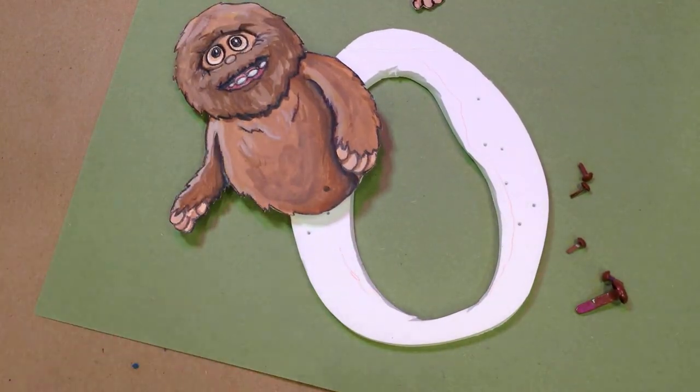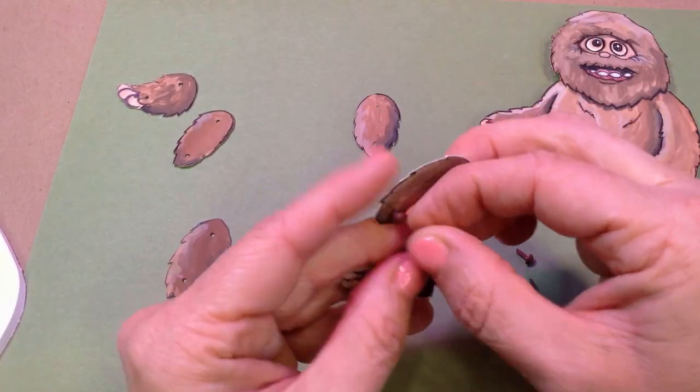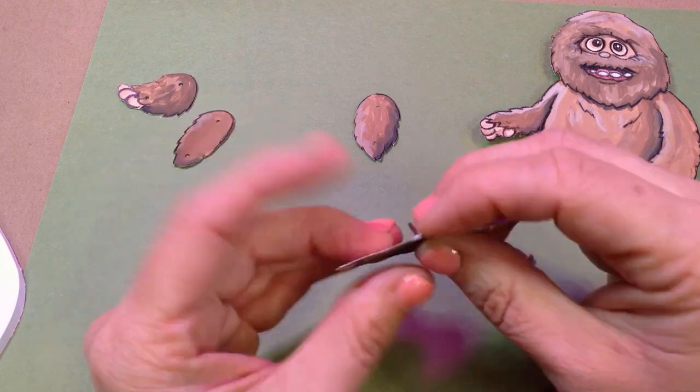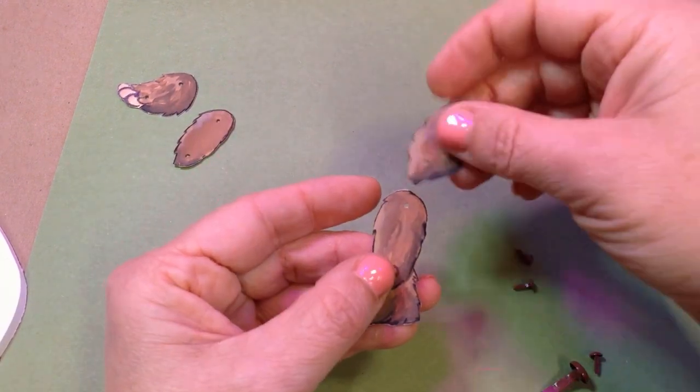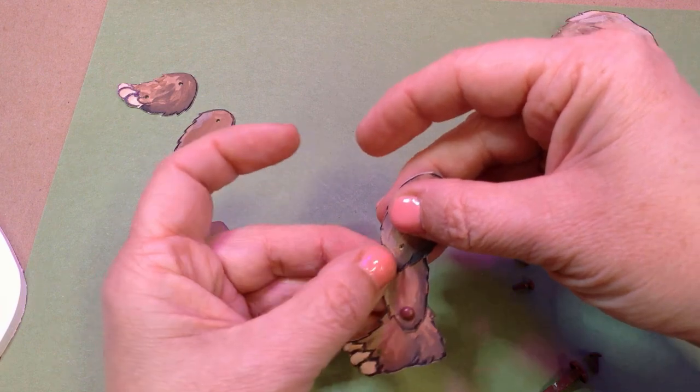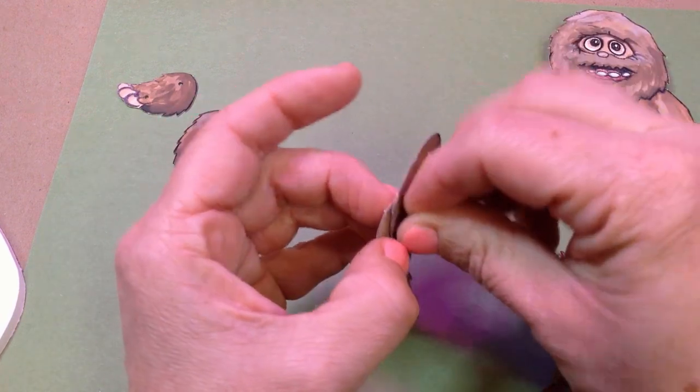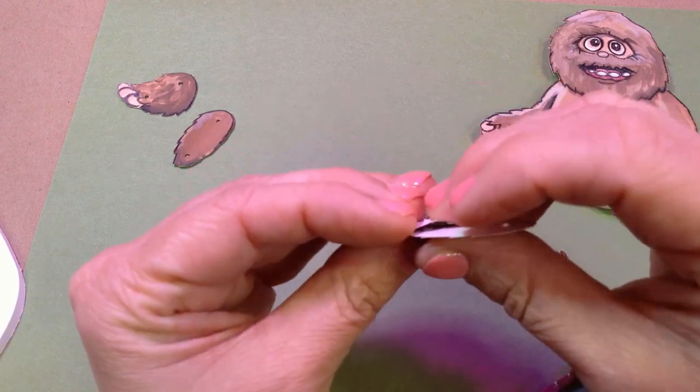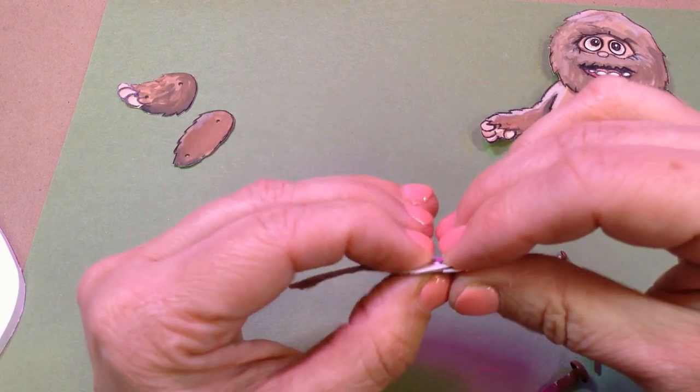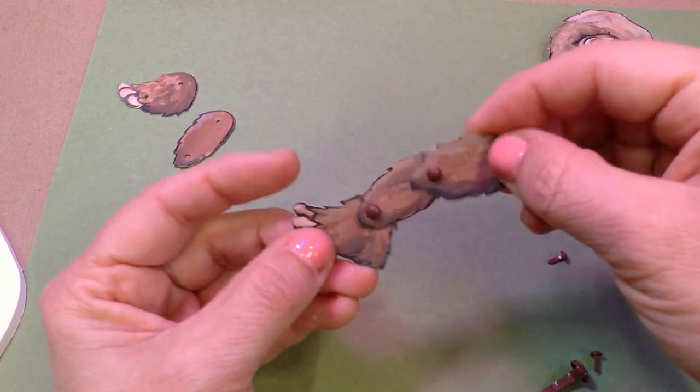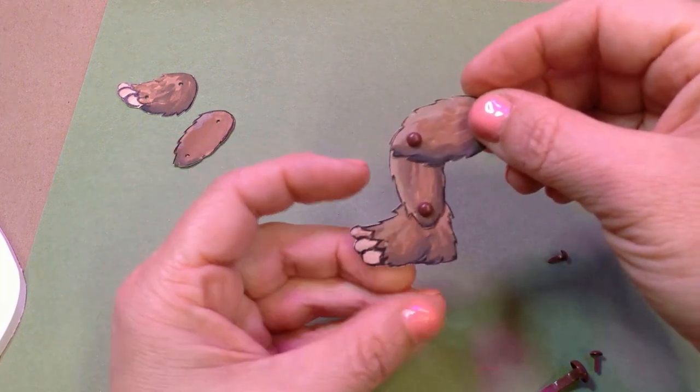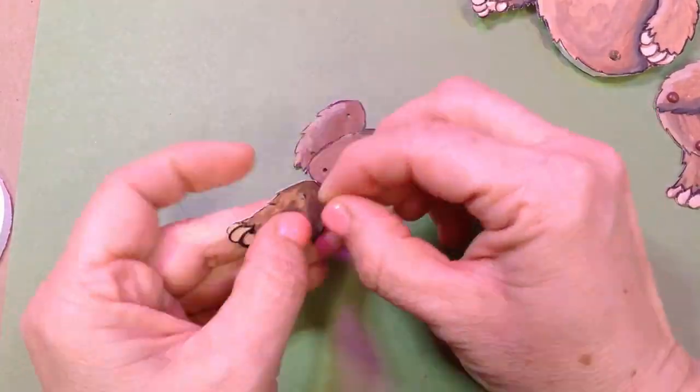Now, we can put Bigfoot's legs together. Place the shin on top of the foot and insert a fastener. Then, we put the thigh piece on top of the shin and insert another fastener. Assemble the second leg in the same manner.